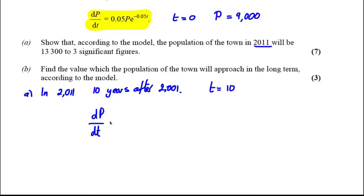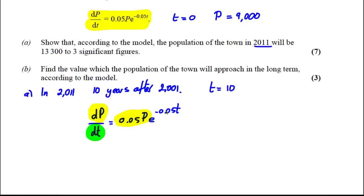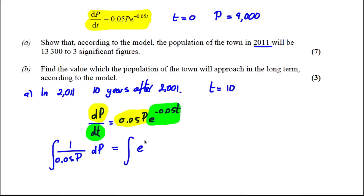We've got dP/dT is equal to 0.05P·e to the negative 0.05T. We're going to separate variables and integrate. I'm going to bring everything with P's to the left hand side, dividing both sides by 0.05 and P, and bring the dT to the right. So the integral of 1 over 0.05P dP is equal to the integral of e to the negative 0.05T dT.